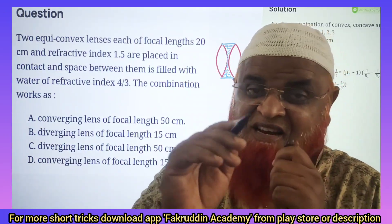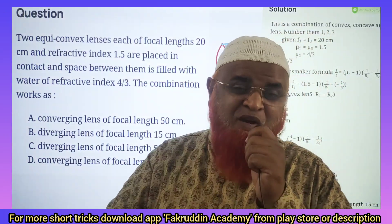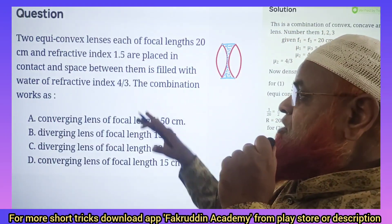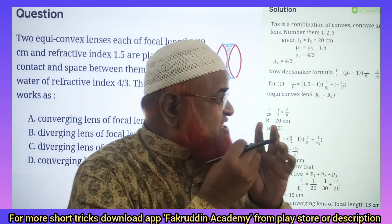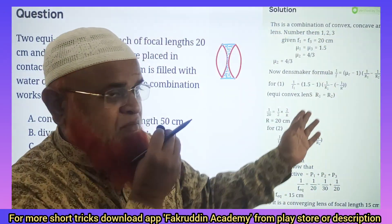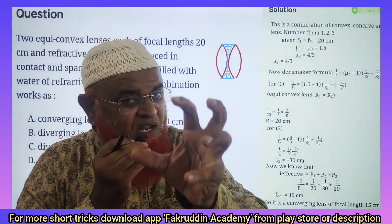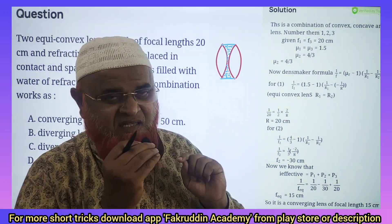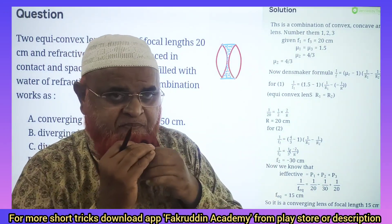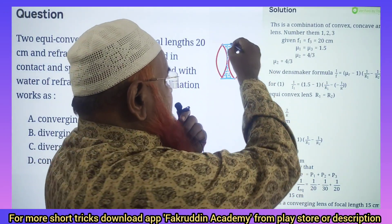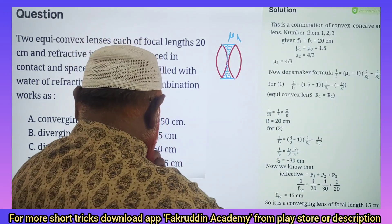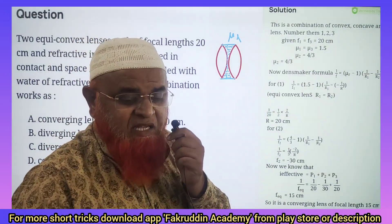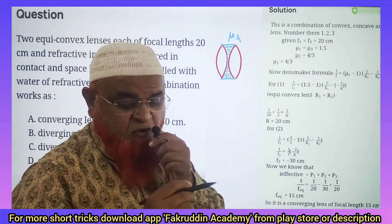This is a highly problematic question, especially for neat students, but I have a shortcut for this. You can see the problem here and the lengthy methods given in the books — this is a diagram. There are two equiconvex lenses. In between there is a liquid with refractive index mu L. It is mu L, and we need to find out the net focal length.